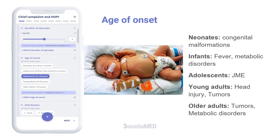The progressive myoclonic epilepsies with onset in adolescence include Unverricht-Lundborg disease, Lafora disease, and other familial forms of juvenile myoclonic epilepsy. A new onset seizure in young adults must raise suspicion of head trauma or brain tumors.